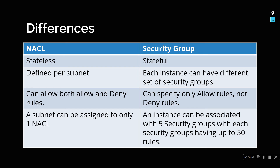A subnet can be assigned to only one NACL. In contrast, a security group instance can be associated with up to five security groups, with each security group having up to 50 different rules. So you can have one security group to open SSH and another for HTTP, with up to five different security groups attached to your EC2 instance and up to 50 rules in each.